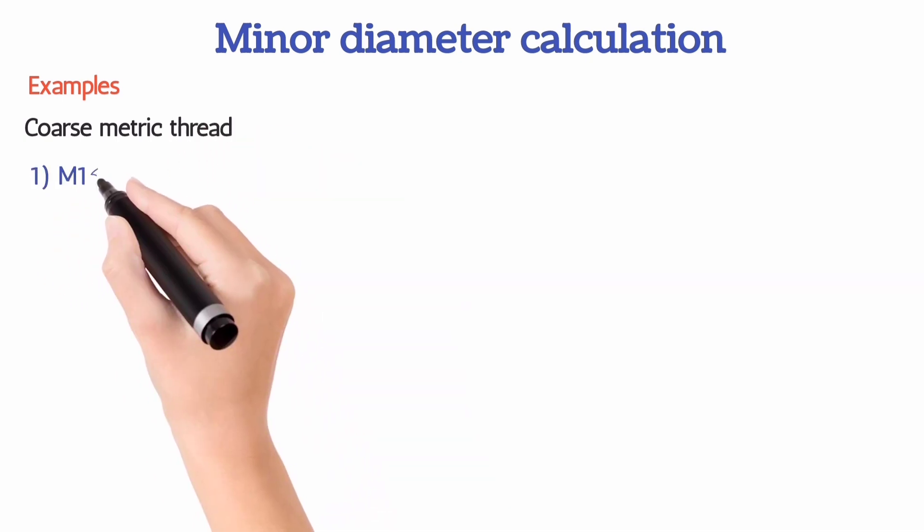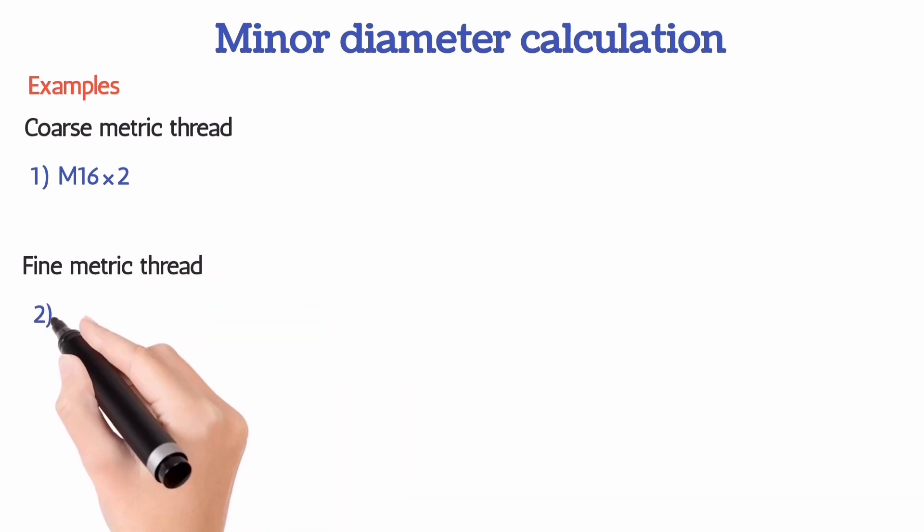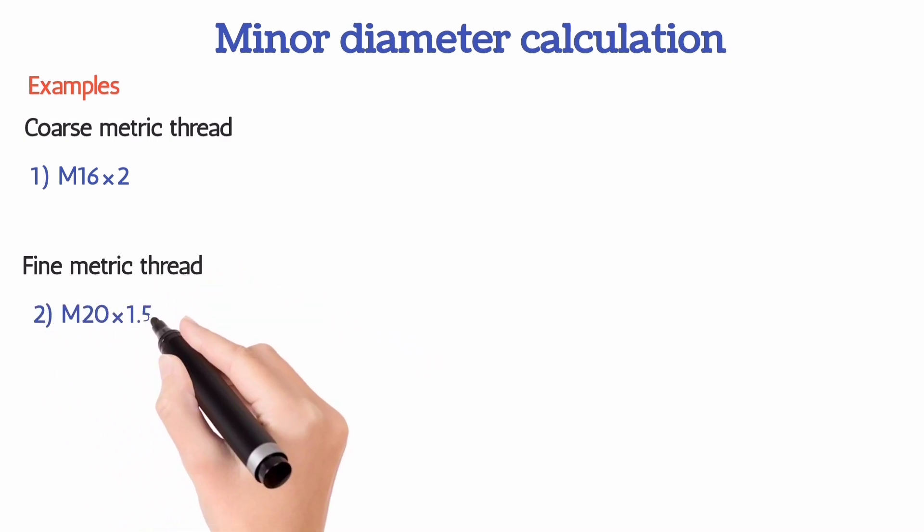I took two examples. One is from coarse metric thread, that is M16 times 2, and another one is from fine metric thread, that is M20 times 1.5.